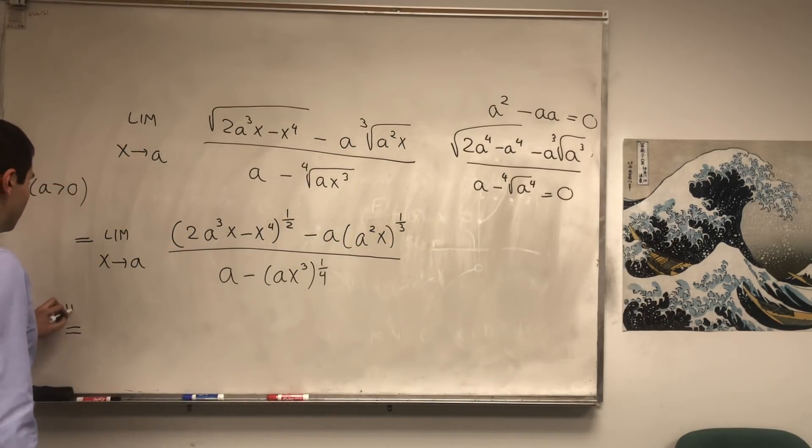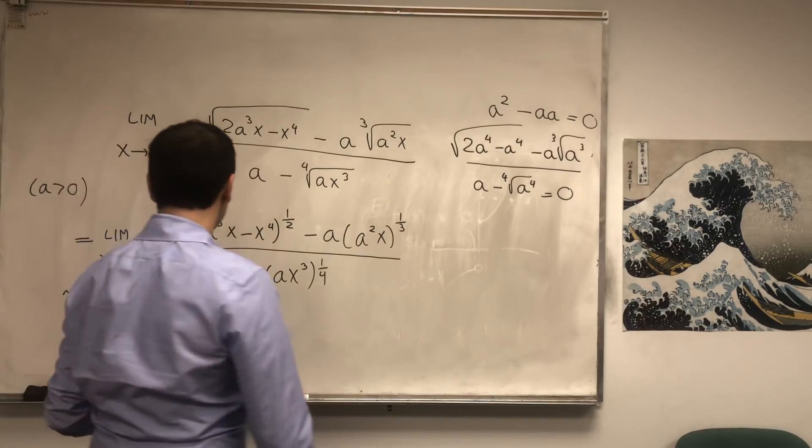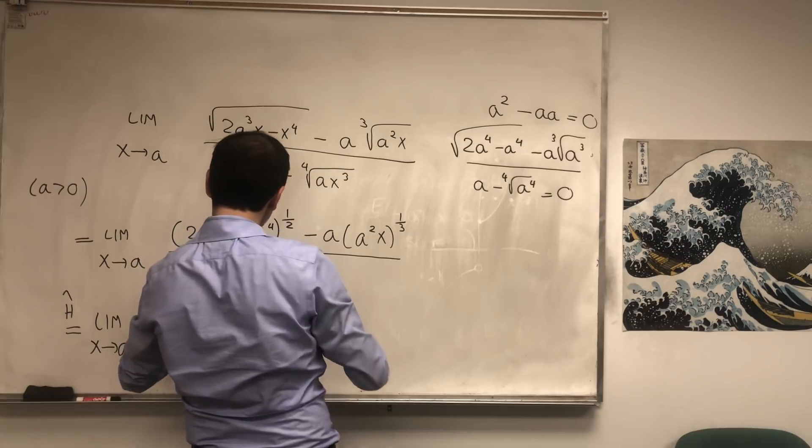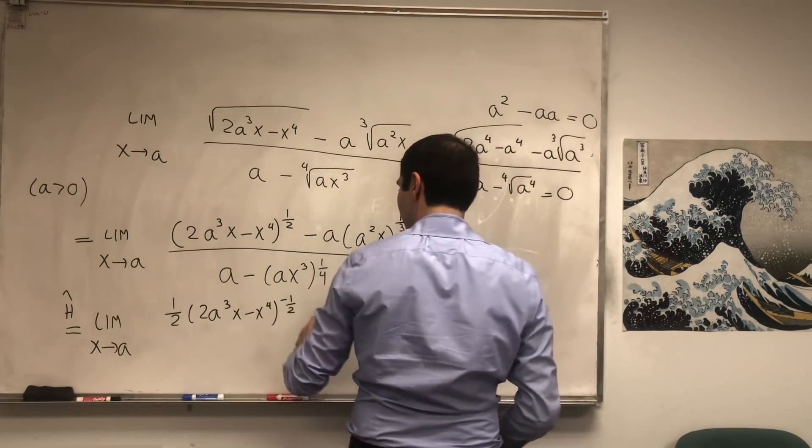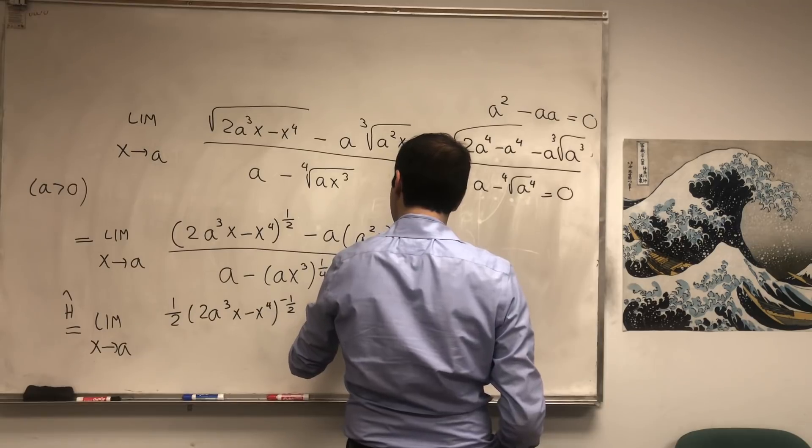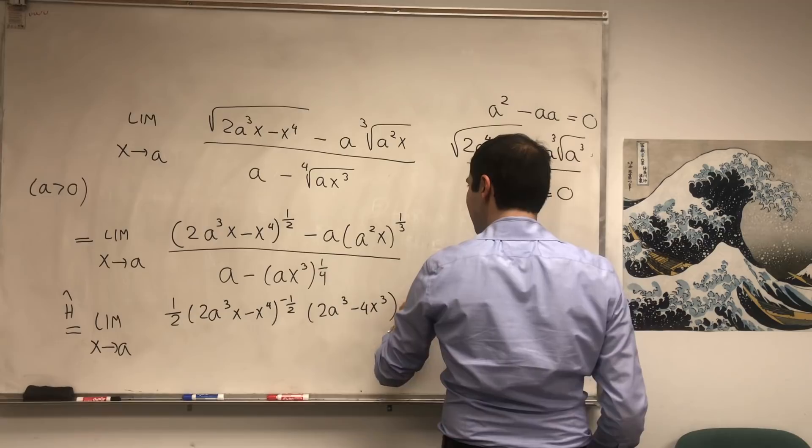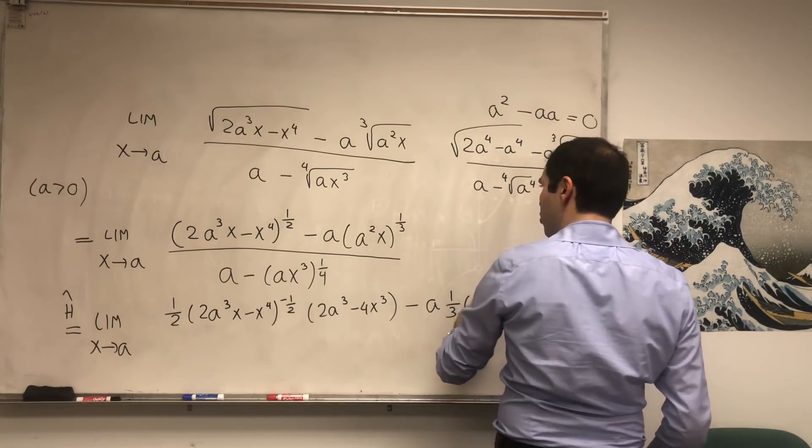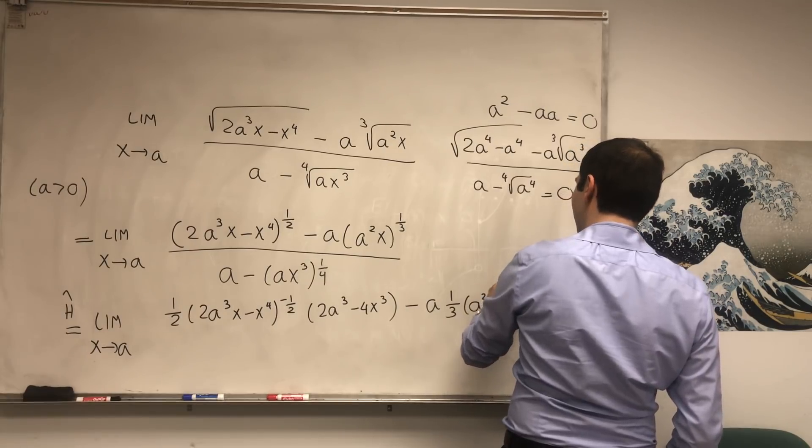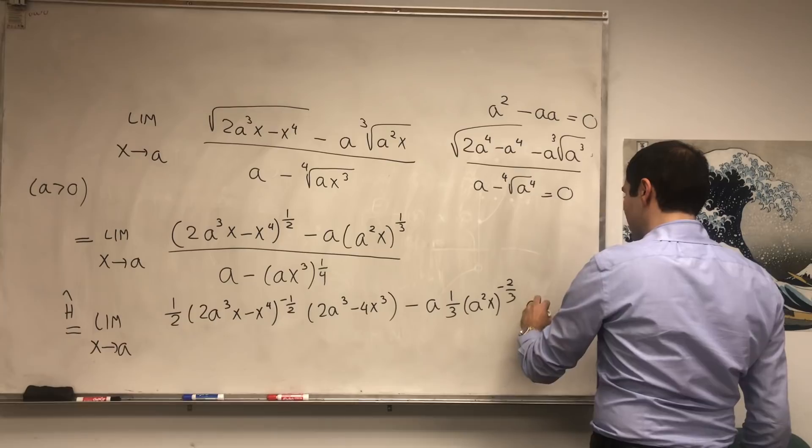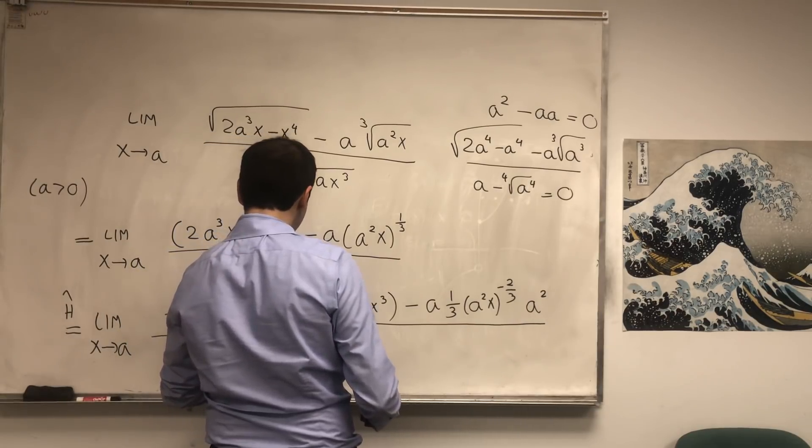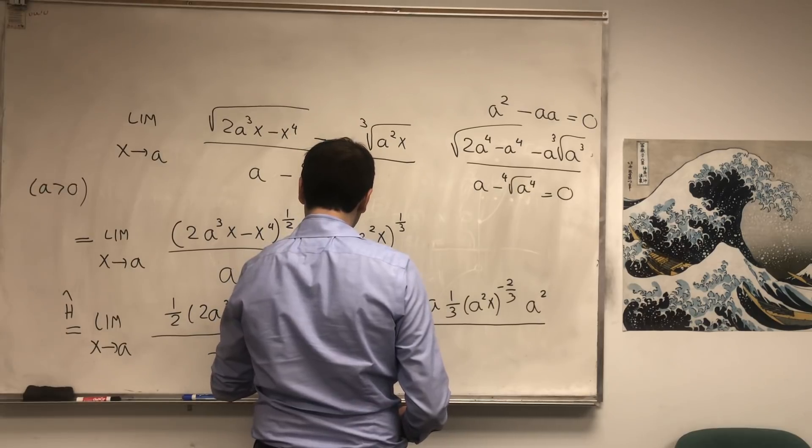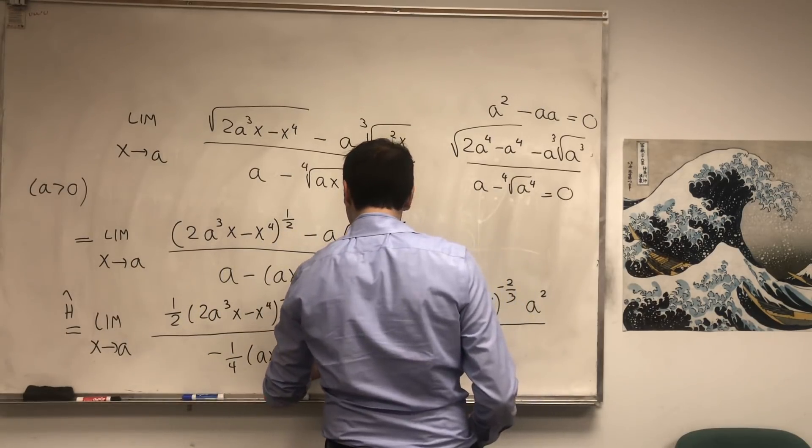Now let's apply L'Hôpital's rule. So now the limit as x goes to a of, so one-half (2a³x - x⁴)^(-1/2) times (2a³ - 4x³) minus one-third (a²x)^(-2/3) times a² divided by minus one-fourth (ax³)^(-3/4) times (3ax²).